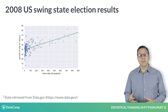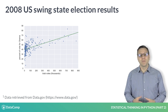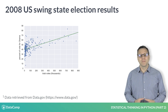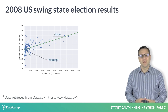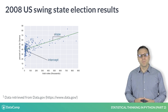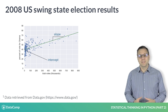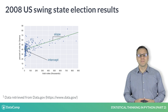Oftentimes a linear function is appropriate to describe data, and this is what we will focus on in this course. The parameters of the function are the slope and intercept. The slope sets how steep the line is, and the intercept sets where the line crosses the y-axis.